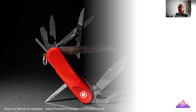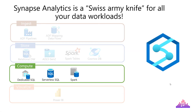I like to think about Synapse as a Swiss Army knife for your data analytic workloads. Now let's explain why. For SQL professionals, there are two pools in Azure Synapse: a dedicated SQL pool, which is the official successor of the former Azure SQL Data Warehouse, and a serverless SQL pool. Developers familiar with Python, Scala, or Spark SQL can leverage Apache Spark pools for processing large volumes of data.